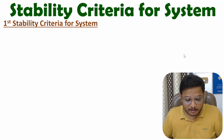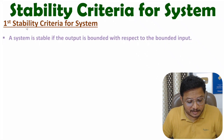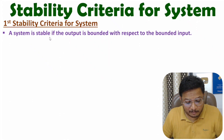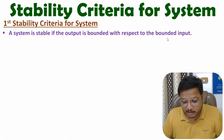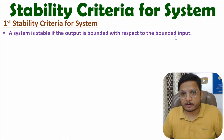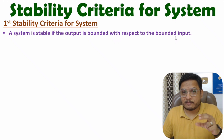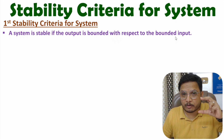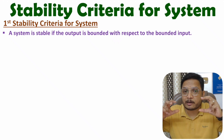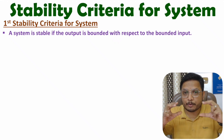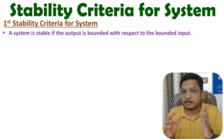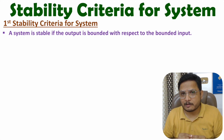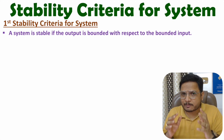The first stability criteria states that a system is stable if the output is bounded with respect to bounded input. So if you have bounded output with respect to bounded input, then the system is stable.